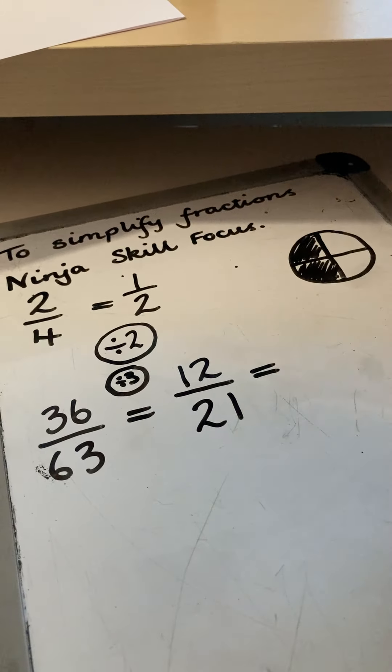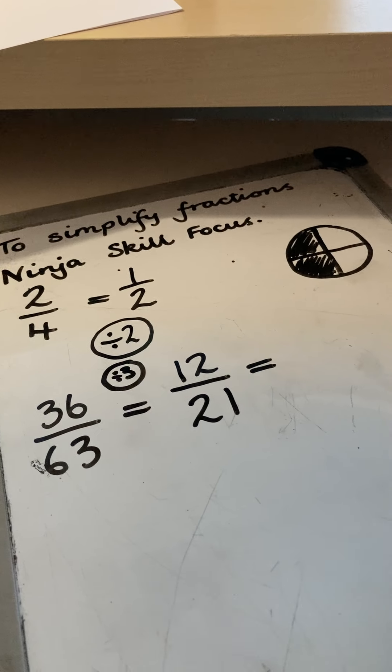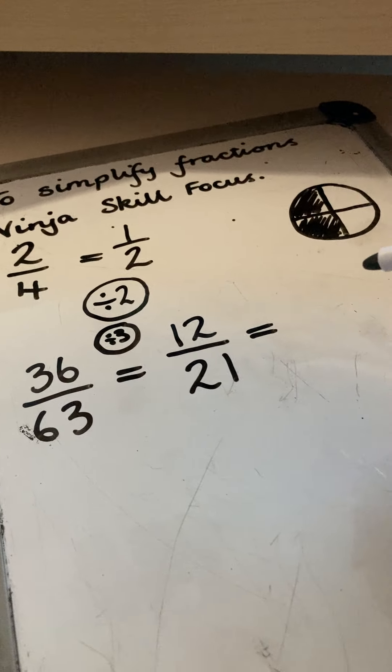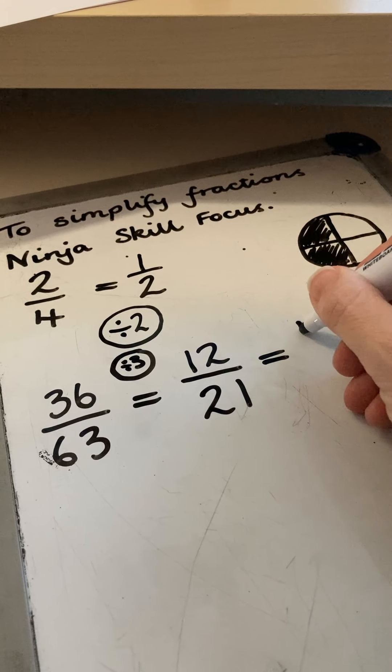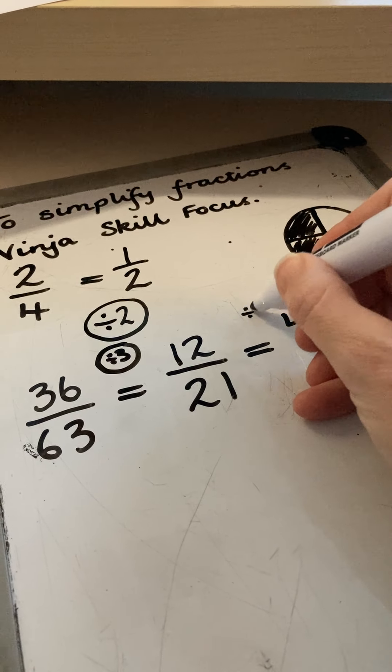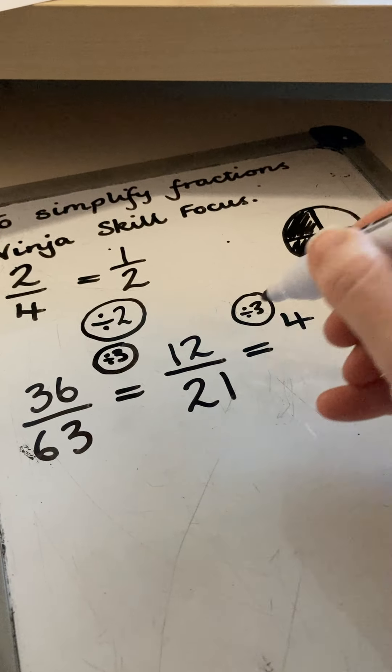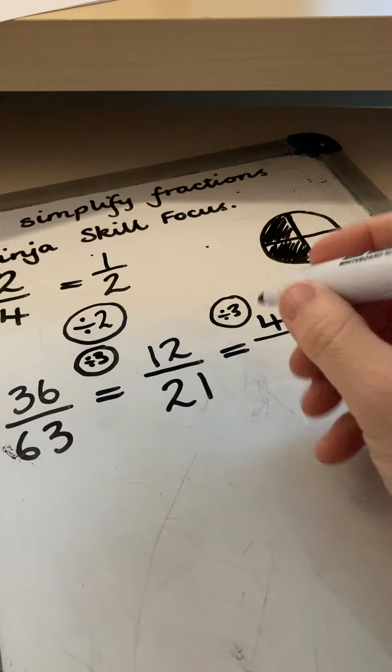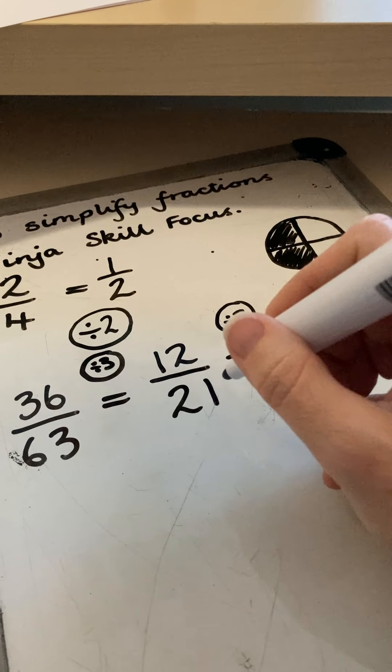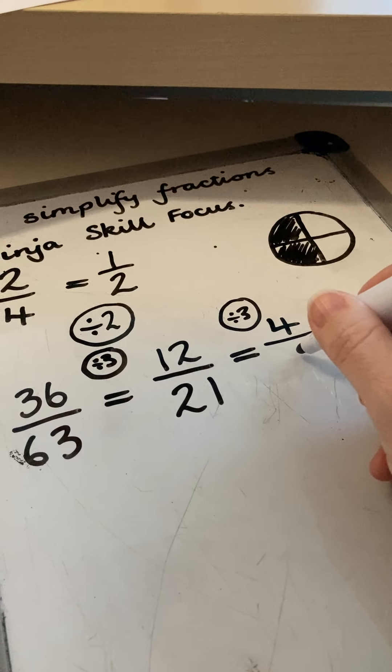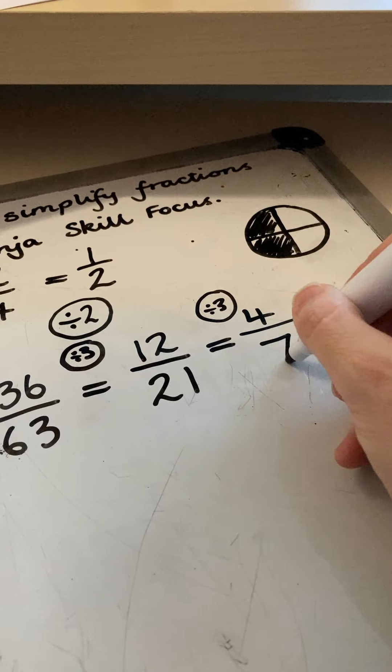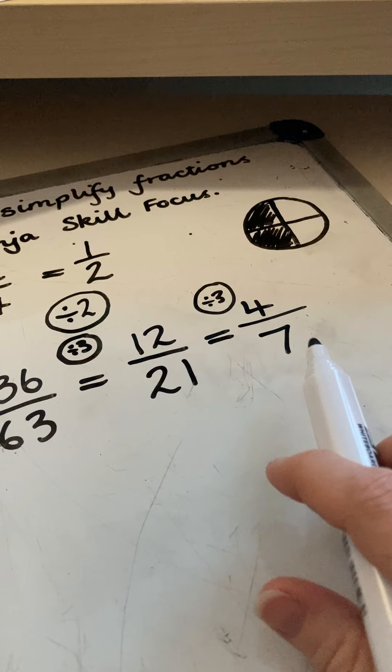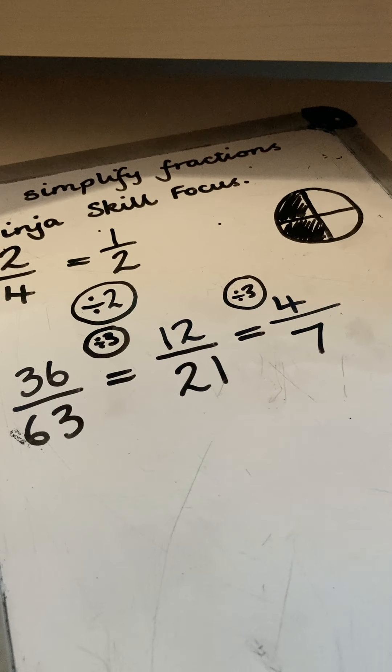And I know I can see straight away that I can divide those numbers again. I know that I can divide 12 by three because there's three fours in 12. Three times four is 12. And I know that three times seven is 21. So I've simplified my fraction. These are all equivalent fractions. And this is the smallest one that I can make on the end here.